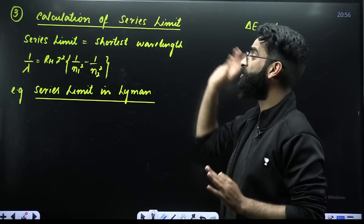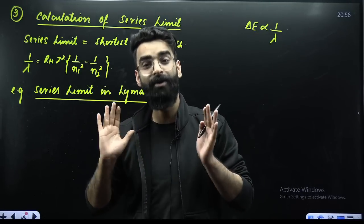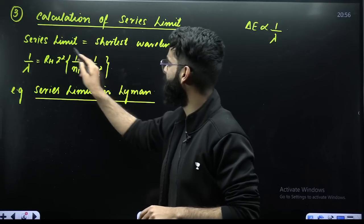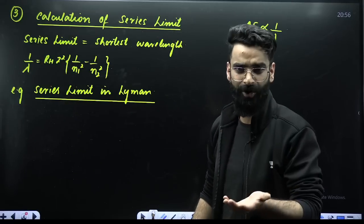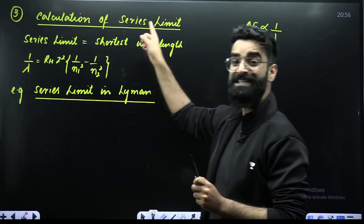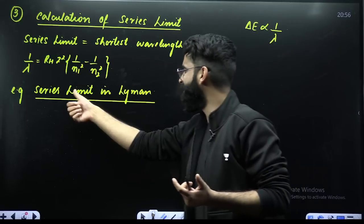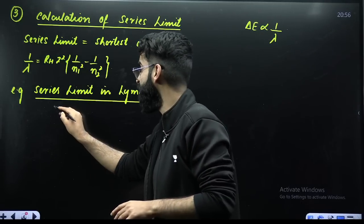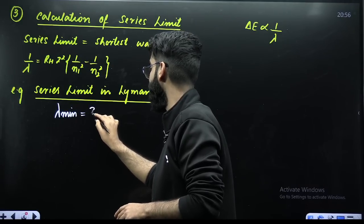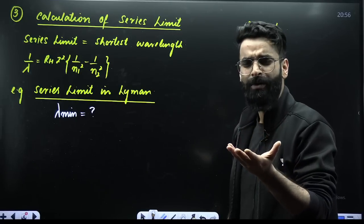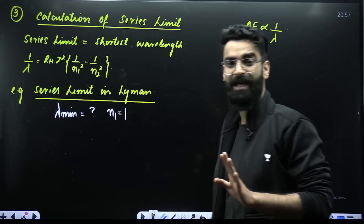Concept number three: calculation of series limit. Series limit means shortest wavelength — the shortest wavelength emitted or absorbed. This is the formula by which we can calculate the wavelength of the photon or radiation emitted or absorbed. What is meant by series limit? Series limit means shortest wavelength. For example, there'll be a question asked to you: calculate the series limit in Lyman. Series limit in Lyman means shortest wavelength. In case of Lyman series, the electron makes a transition from a higher energy state to shell number one, so the ground state of Lyman is one.